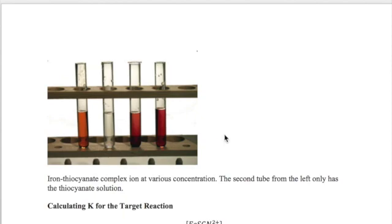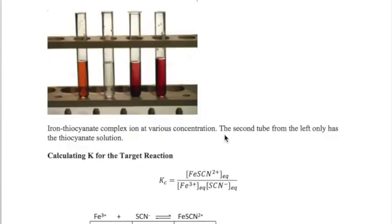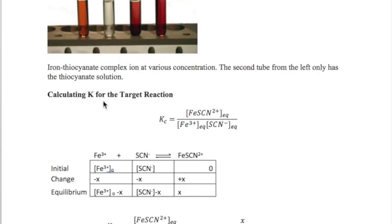To calculate the K, or the equilibrium constant for this reaction, we take product over reactants, or iron thiocyanate over iron times thiocyanate, in which all expressions are equilibrium concentrations.